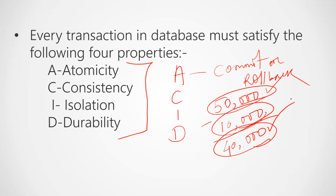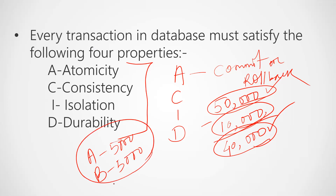The second property is Consistency. Consistency means that if we have a transaction to perform, the database must remain consistent before and after the transaction. Suppose A and B are two people — A has $5,000 and B has $5,000, making a total of $10,000 before the transaction.